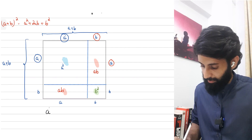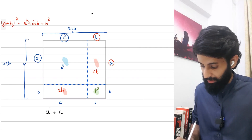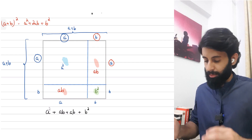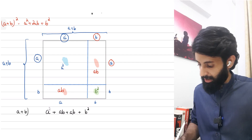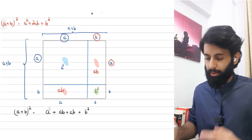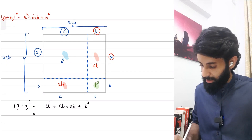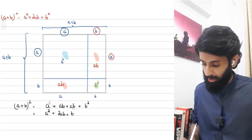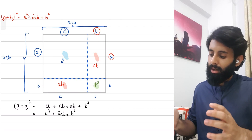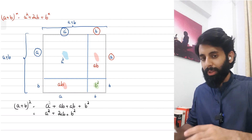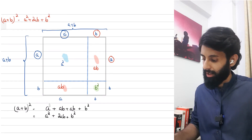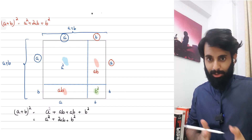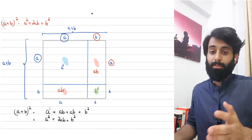The little square at the bottom right has area b². Now if I sum them all up: the first square gives a², the two rectangles give ab + ab, and the little square gives b². This gives us a² + 2ab + b², which is the area of the square with side length (a + b). So (a + b)² = a² + 2ab + b².